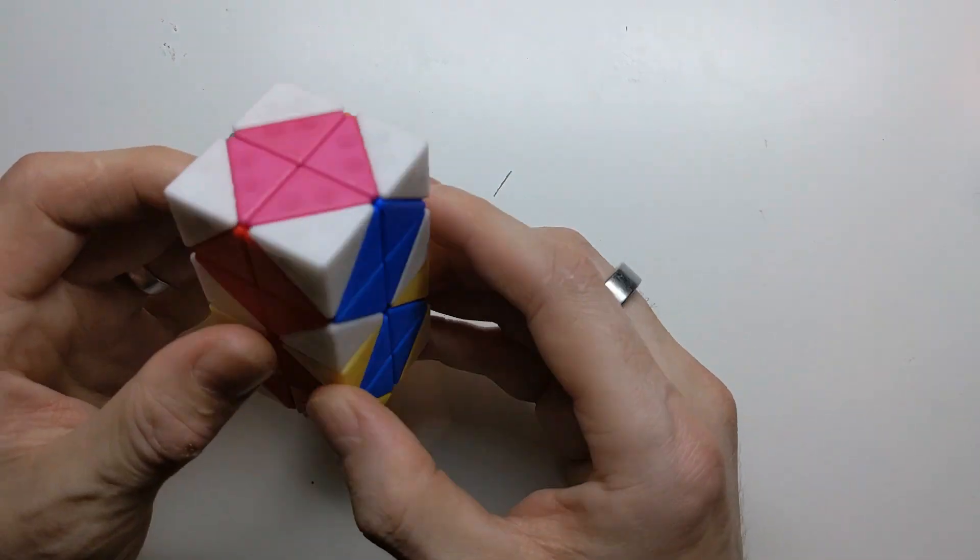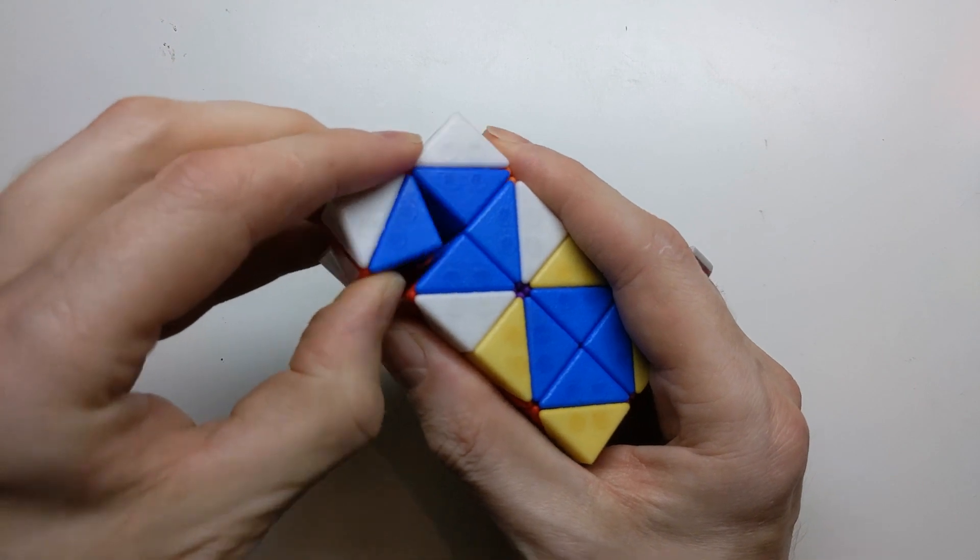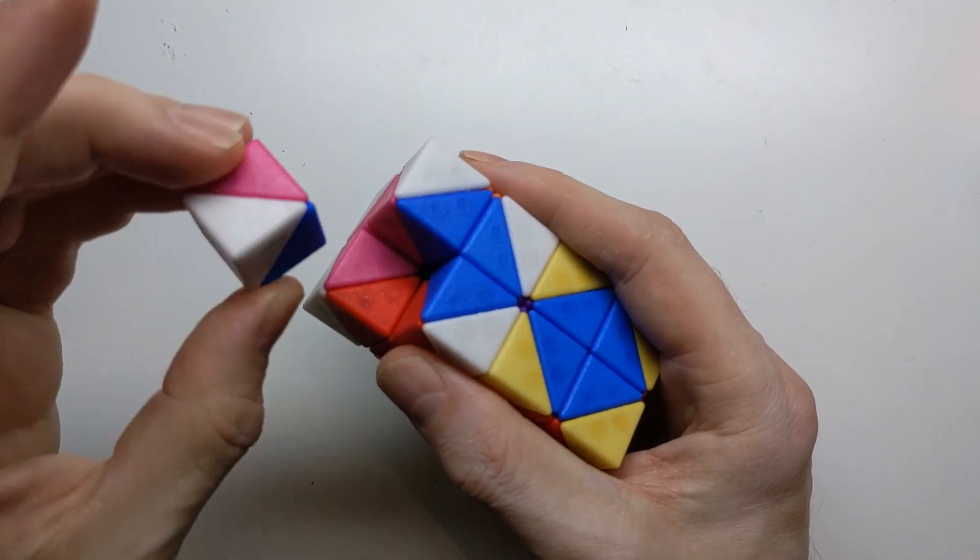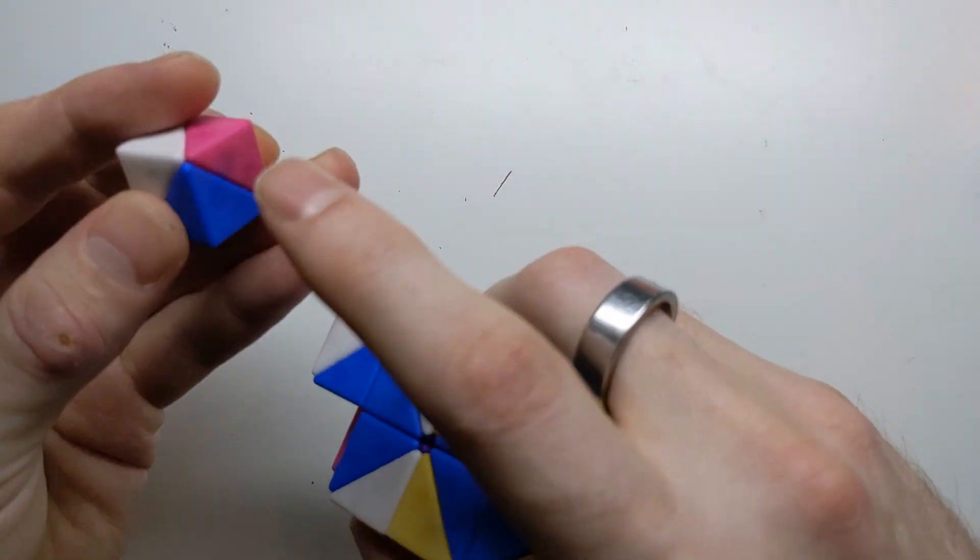As you'll hopefully have seen from my previous video, the puzzle is made up of 16 cubes held together with magnets, and each of these cubes has four colors on it. So this one, for example, is white, pink, red, and blue.